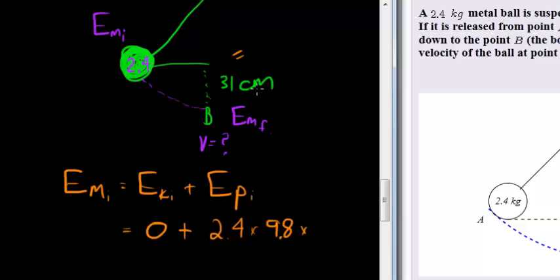Now, 31 cm must be converted into meters. To go from centimeters to meters, we divide by 100, which means that this becomes 0.31 meters.